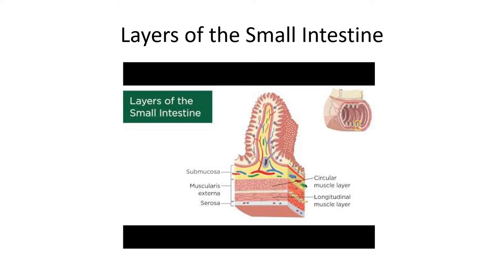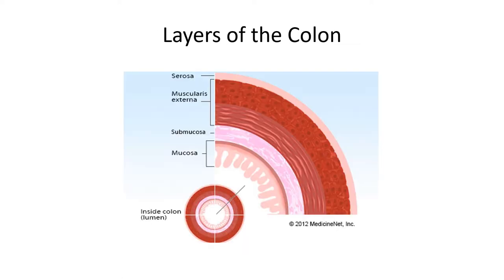Next we look at the layers of the colon, also known as the large intestine. Again you can see the serosa, the muscularis, the submucosa, and the mucosa layer — showing the inside of the lumen of the large intestine. When we talk about ulcerative colitis and Crohn's disease and which layers are affected, you'll know what we mean based on these layers of the small and large intestine.